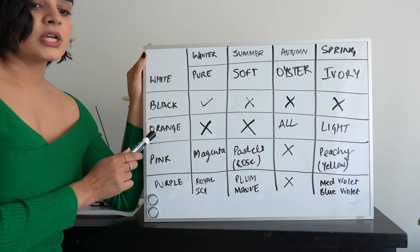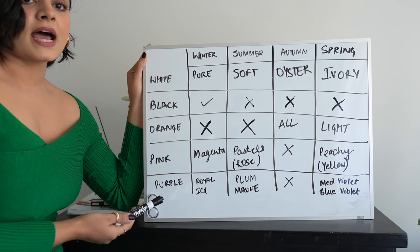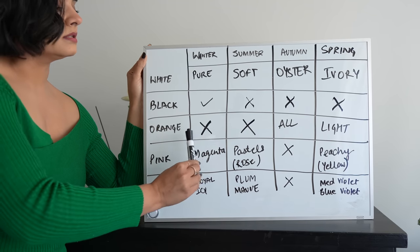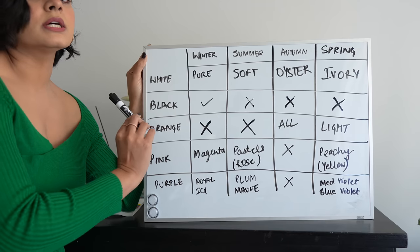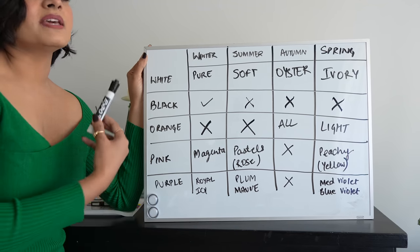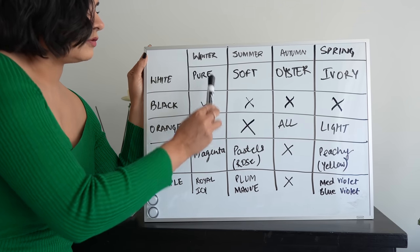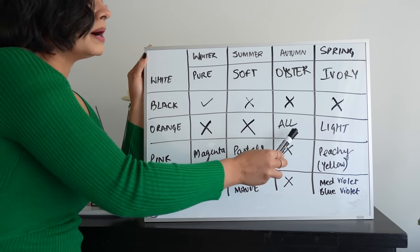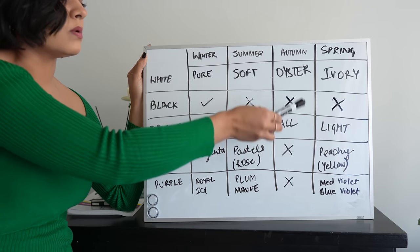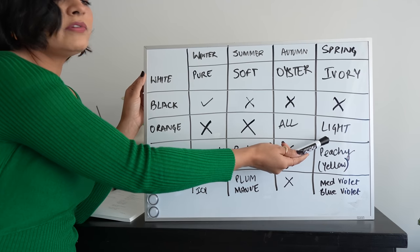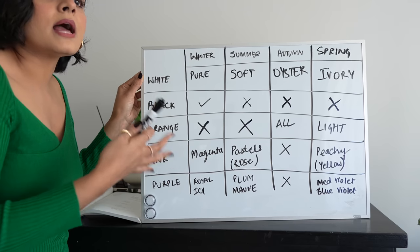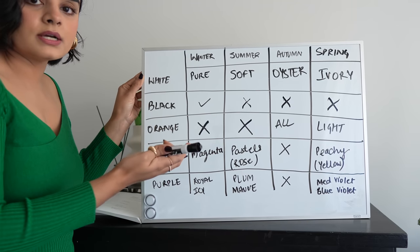The next color on the list is orange, and I think this color can really help you find your color season. For winter and summer, orange does nothing for you — it makes you look sick, brings out your blemishes, dark circles, and makes you look pasty. But if all shades of orange work best for your skin, then you are an autumn season. For spring, light shades of orange work best — for example, apricot, peach, light rust, and corals.